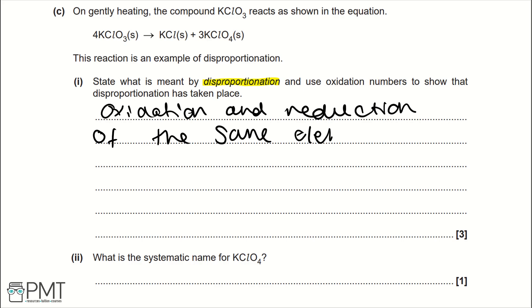Looking at the equation we've been given and writing the oxidation numbers: potassium always has an oxidation state of +1, and oxygen always has -2. It will be chlorine that undergoes disproportionation. For KClO₃, we have +1 plus (-2 × 3), which gives us -5, so the oxidation number of chlorine in the reactant is +5.